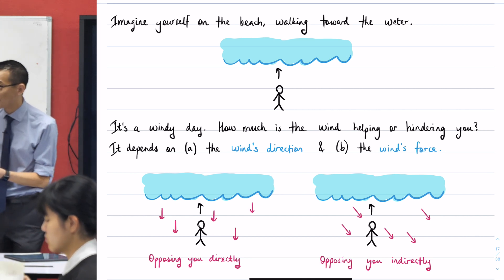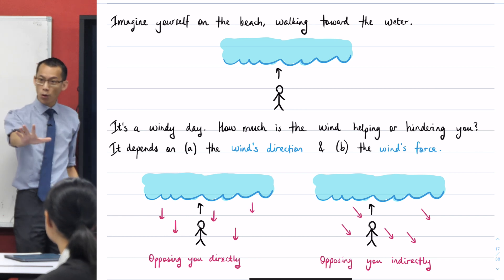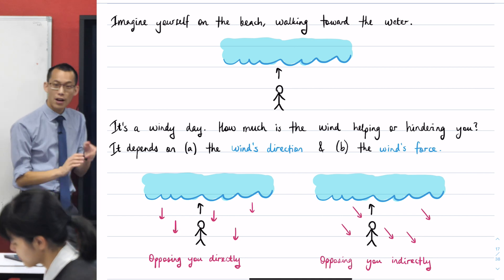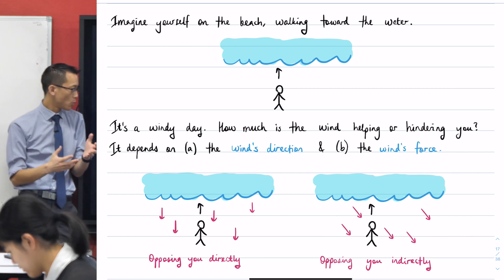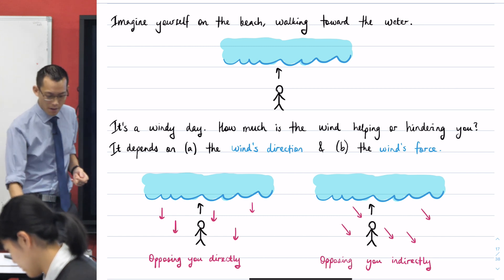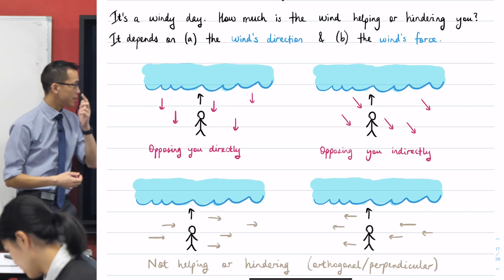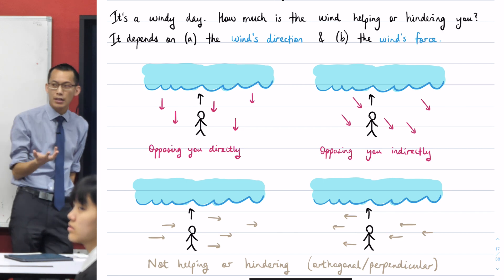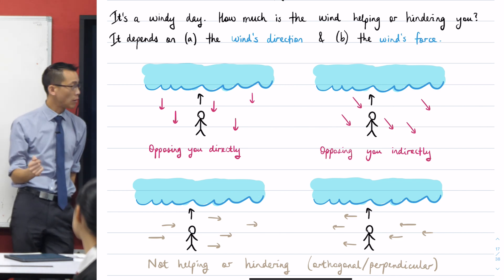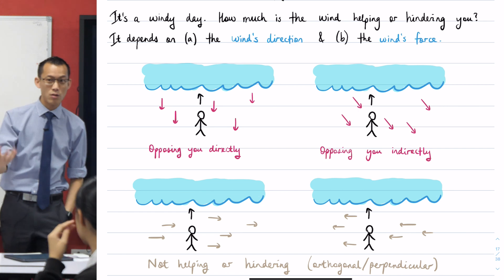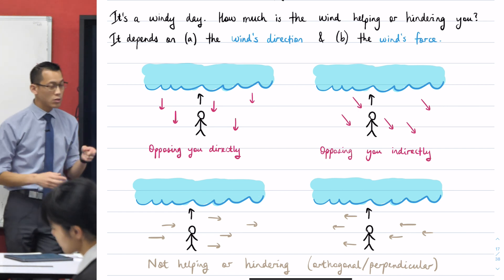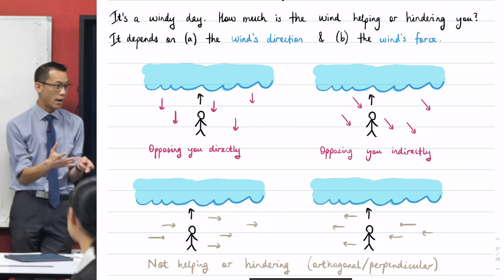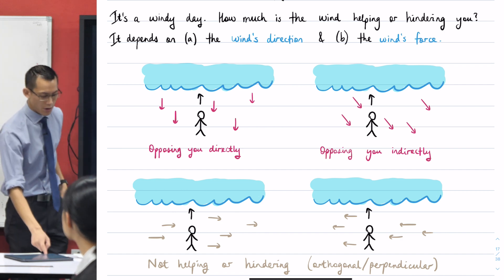So imagine yourself on the beach trying to walk toward the water. And importantly, it doesn't matter where in the water you land, you're just trying to get wet. So you're just trying to get out there. Now if it's a windy day, which it often is at the beach, then the question that the dot product answers is how much is the wind swirling around you? How much is it helping you towards the water, or how much is it hindering you away from your goal, away from the water? Clearly it depends on two things. And you can see why this relates to vectors. How much the wind is helping or hindering you depends on which way is the wind blowing, what's its direction, and how much force is the wind applying, what is its magnitude.